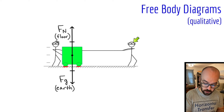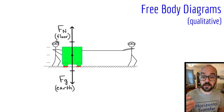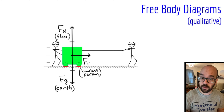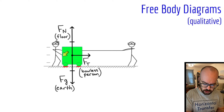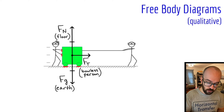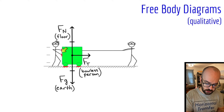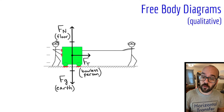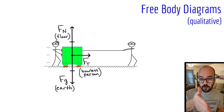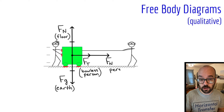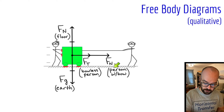Now the person without the bow is pulling on the cart with a rope to the right, so we've got a tension force to the right that the bowless person is exerting on the cart. The person with a bow is also exerting a force — their hands are touching the cart. Anytime there are two surfaces in contact we have a normal force. I'll highlight where those surfaces are: they are vertical surfaces touching, so the normal force has to be perpendicular, meaning horizontal. In this case she's pushing the cart to the right, so I have an additional force to the right — a normal force from the person with the bow.